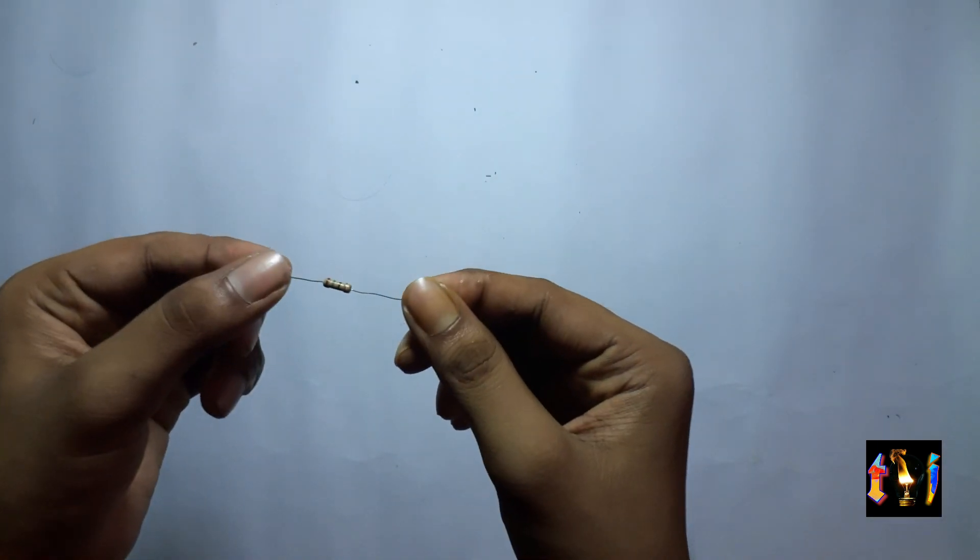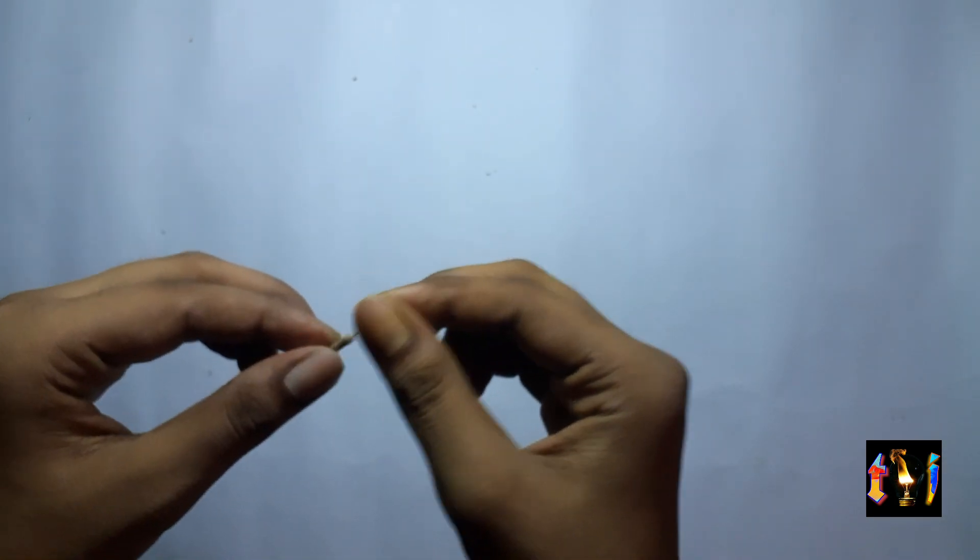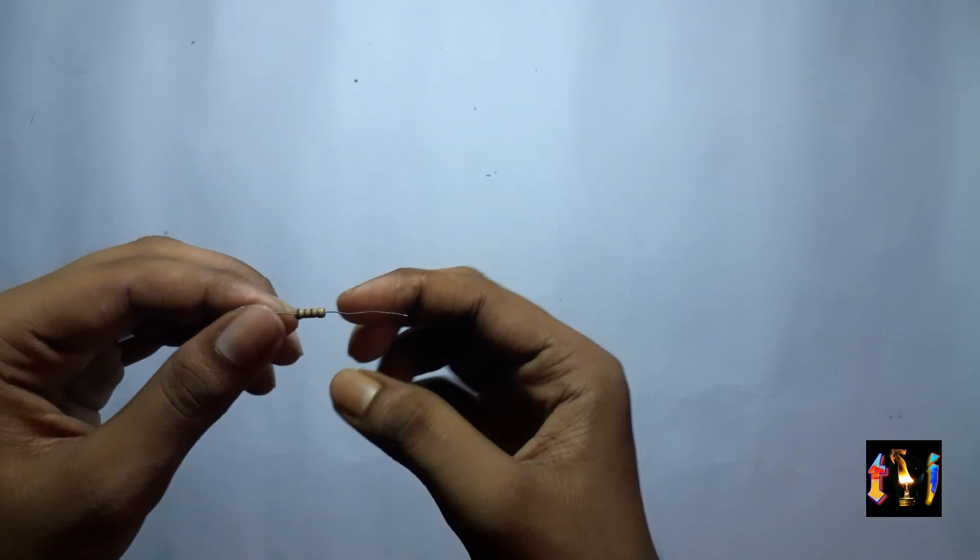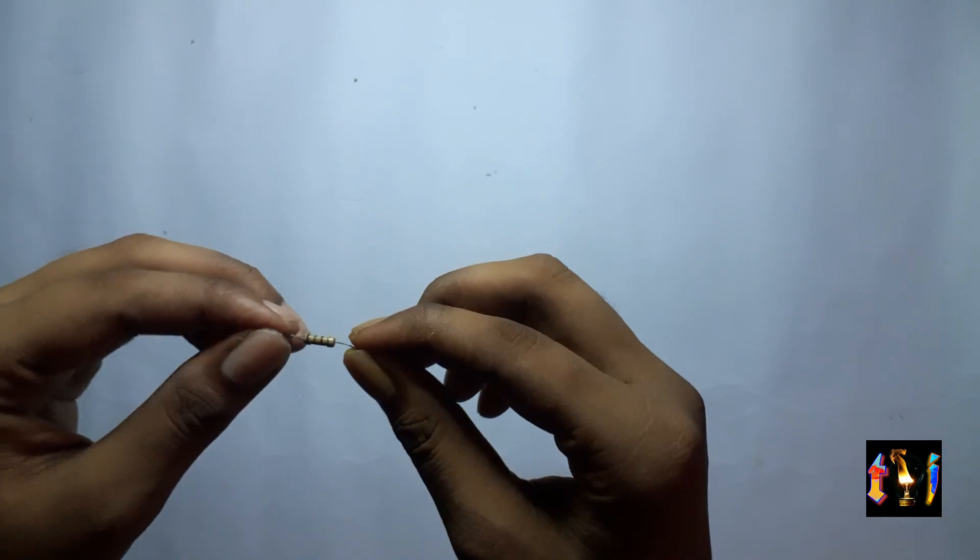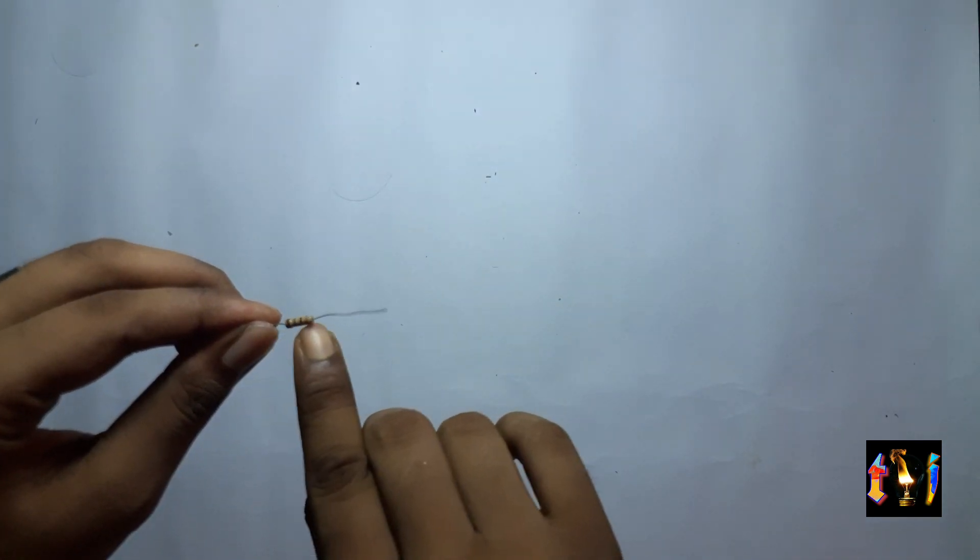Now for those of you guys who don't know what a resistor looks like, a resistor looks like this. These are its two terminals and this is the body of the resistor with some color coding as you can see.